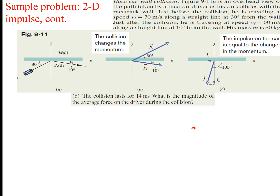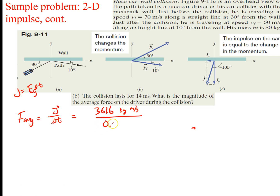If the collision lasts 14 milliseconds, what is the magnitude of the average force on the driver during the collision? We know that average force equals our impulse divided by delta t, since J equals F_average times delta t. Plugging in: 3616 kg·m/s divided by 0.014 seconds gives approximately 2.6 times 10 to the 5th newtons. That's the average force on the driver as he's hitting the wall.